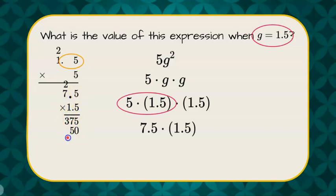5 times 1, and 1 times 7, and we add 5, 12, carry the 1, and 11, and I need two decimal places this time. So our answer is 11.25.